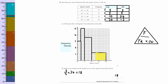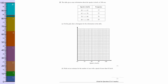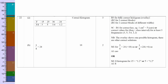Let's have a look at the mark scheme. You can see that the frequency densities are 3, 5, 3.6, and 1.2, and you need to draw the proper histograms. I would imagine you'd need to label it too. And this one here is just three quarters of 24, which is 18 — so 2 marks.